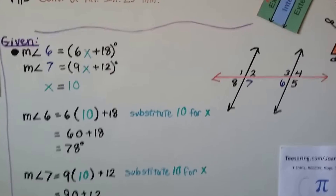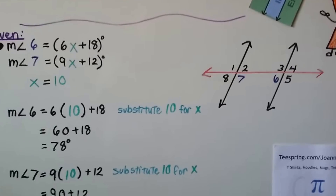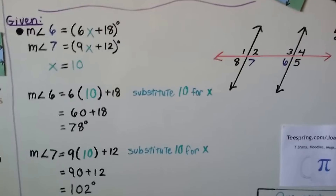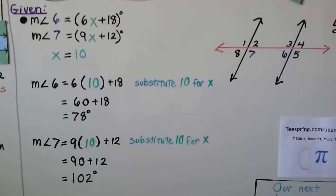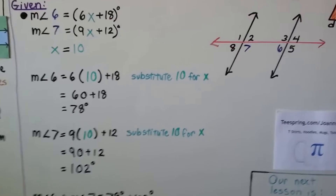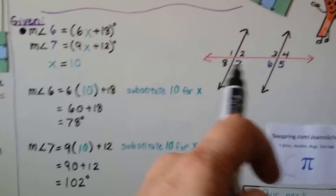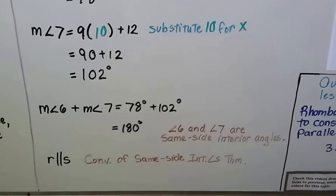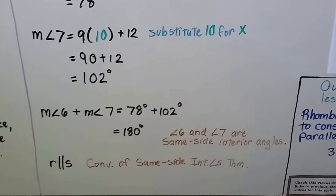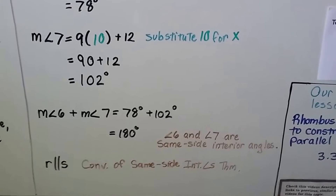We're given that the measure of angle 6 equals 6x + 18 degrees and the measure of angle 7 equals 9x + 12 degrees, with x = 10. Substituting: angle 6 = 6(10) + 18 = 78 degrees, and angle 7 = 9(10) + 12 = 102 degrees. Angles 6 and 7 are same side interior angles. Adding them: 78 + 102 = 180 degrees, so r is parallel to s by the converse of the same side interior angles theorem.